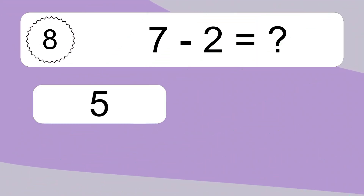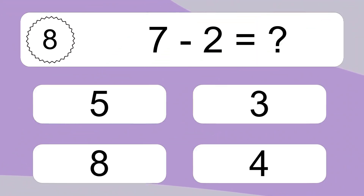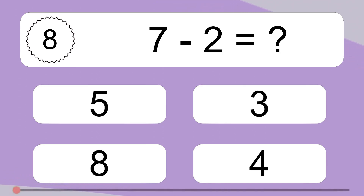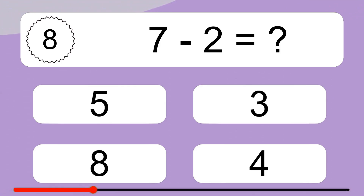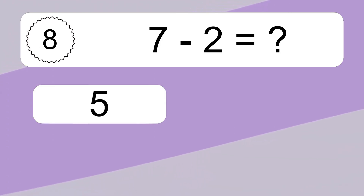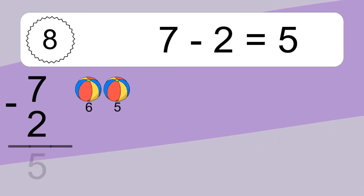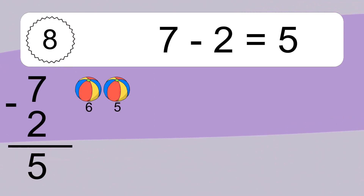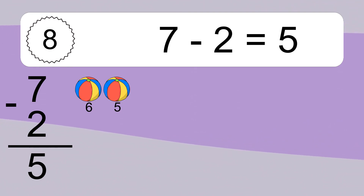7 minus 2 equals what? 7 minus 2 equals 5. Let's count it: 6, 5.